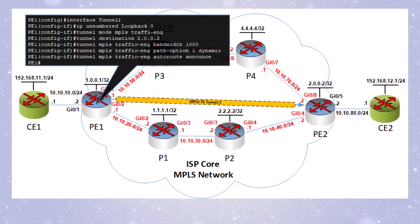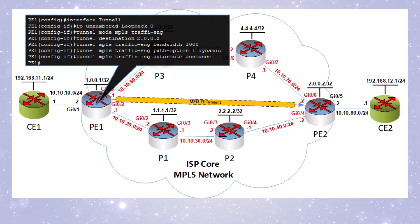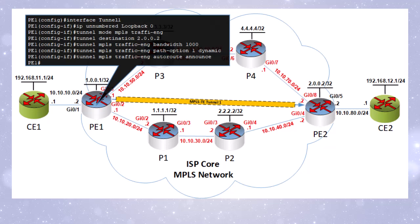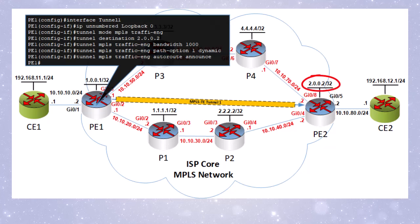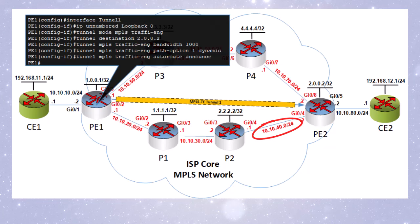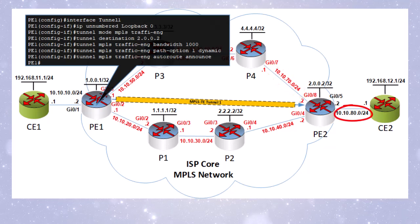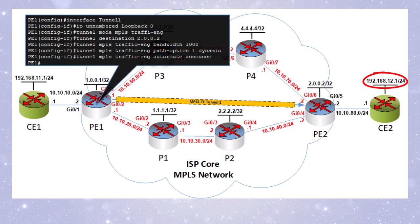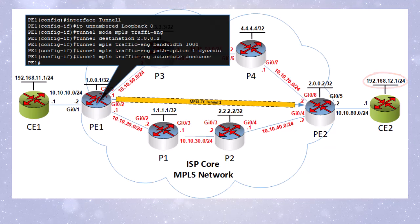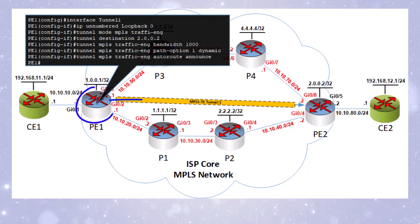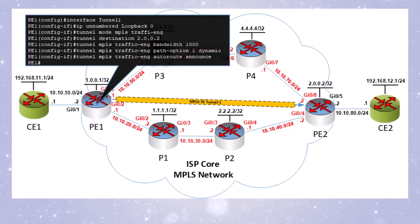By entering this command, we tell OSPF that any routes learned directly from the tail end router PE2 can be routed through the tunnel interface as the exit interface. So what should we expect in PE1's routing table? The MPLS TE tunnel 1 will be preferred as the outgoing interface for any destination reachable through PE2 — including the 2.0.0.2/32 loopback address, the 10.10.40.0, 10.10.70.0, 10.10.80.0, and 192.168.12.0 destination networks. All of these are expected to appear in the routing table with an exit interface of tunnel 1.